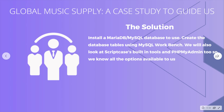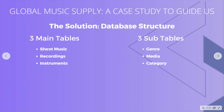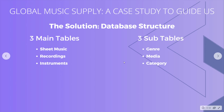Let's look at our database structure. We're going to have three main tables for our three main products: sheet music, recordings, and instruments. Then we'll have three sub-tables to support those. Genre — so we can have different genres for sheet music and recordings. For recordings there will be different types of media like CD, vinyl, MP3, etc. For instruments there will be different categories like string instruments, brass instruments, percussion instruments, etc. We'll set up foreign key relationships to link our main tables to our sub-tables.